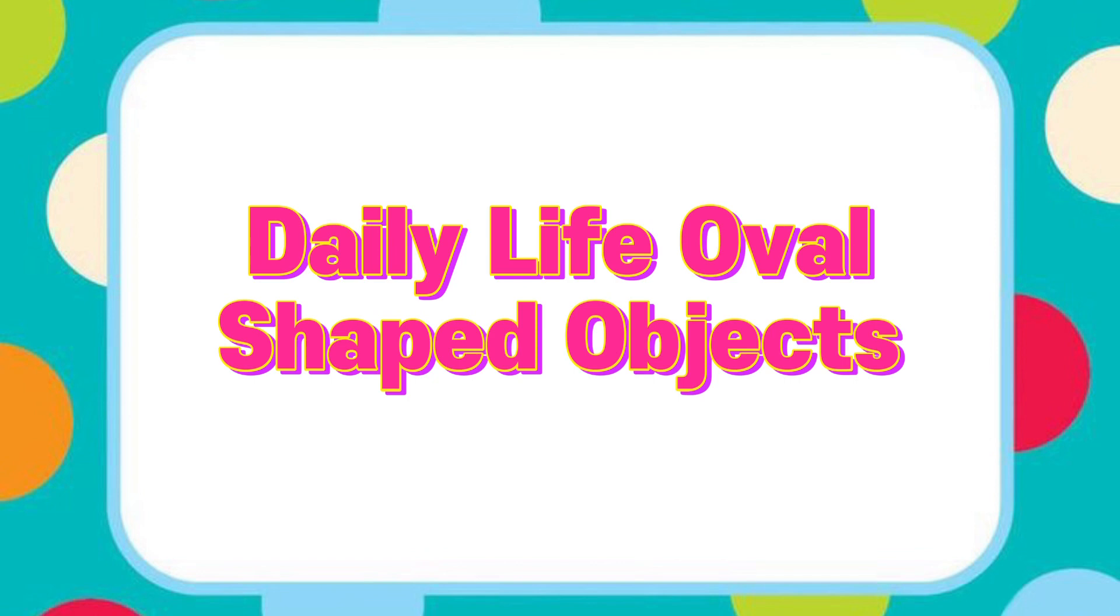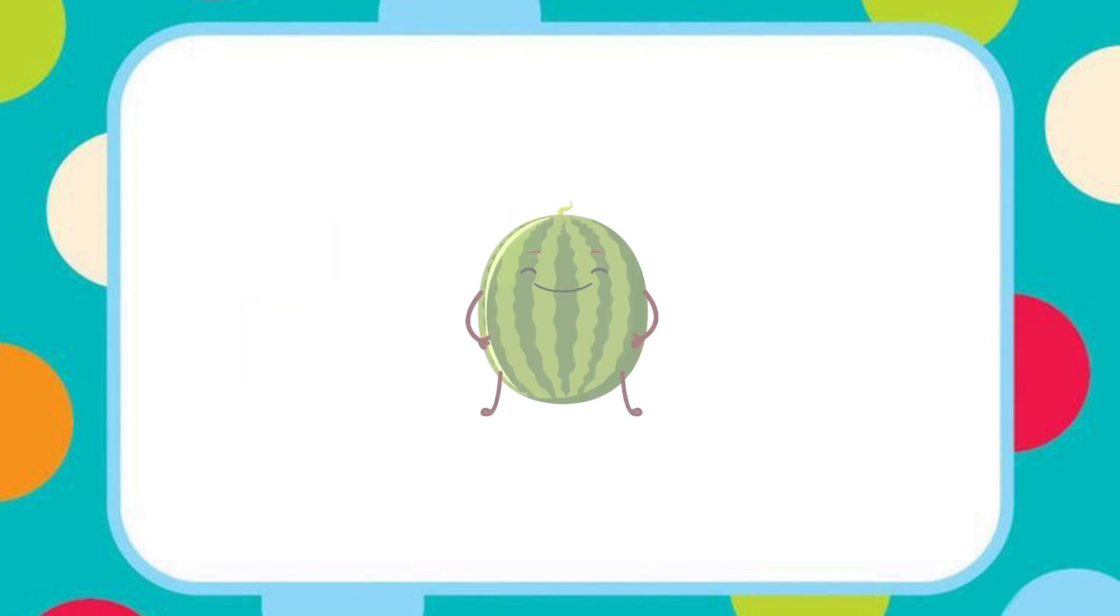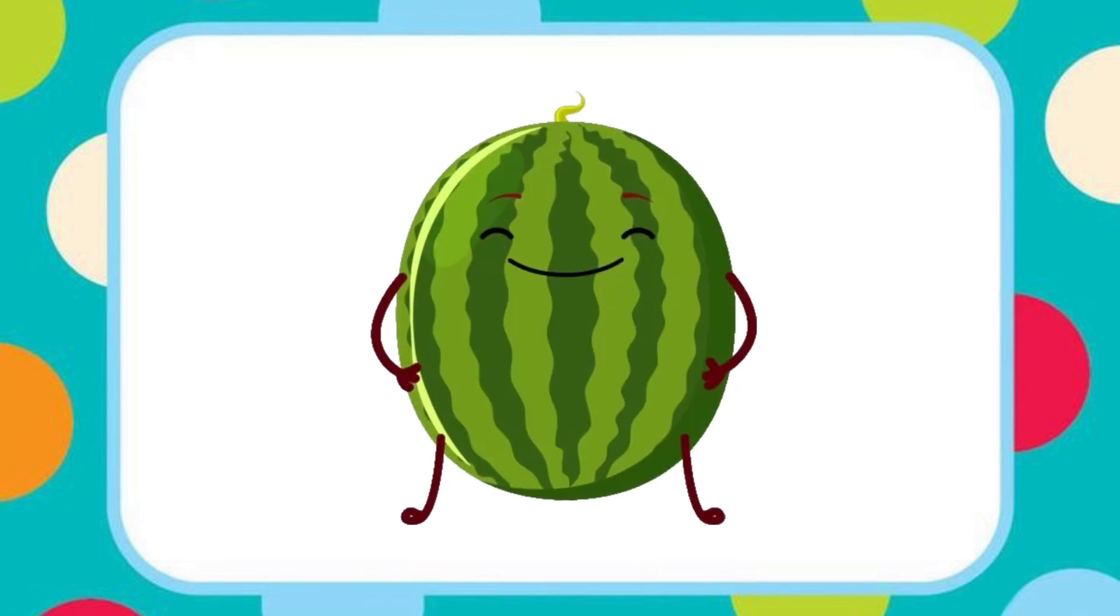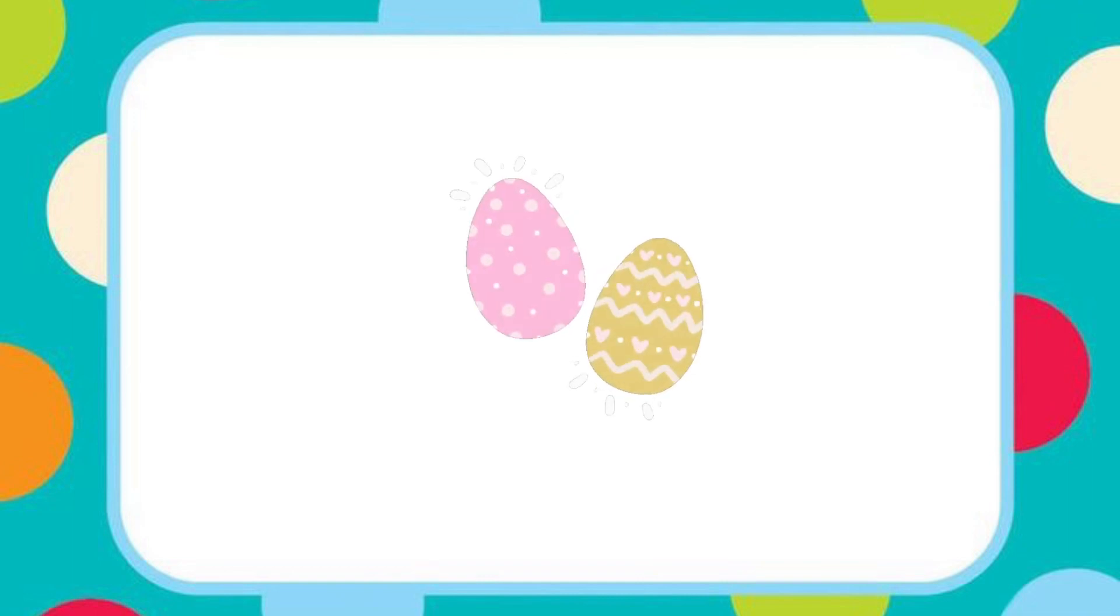Let's see some daily life oval shaped items. A watermelon has an oval shape. The shape of an egg is oval.